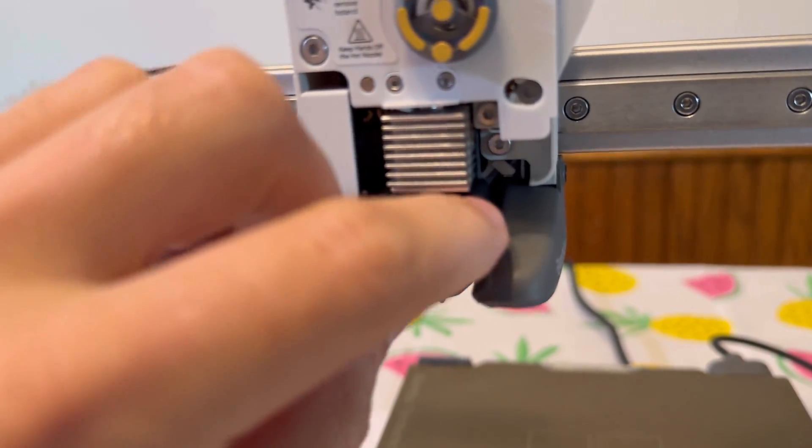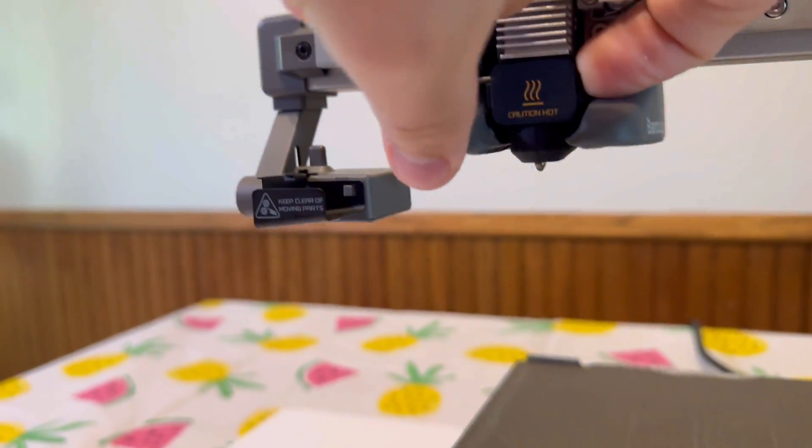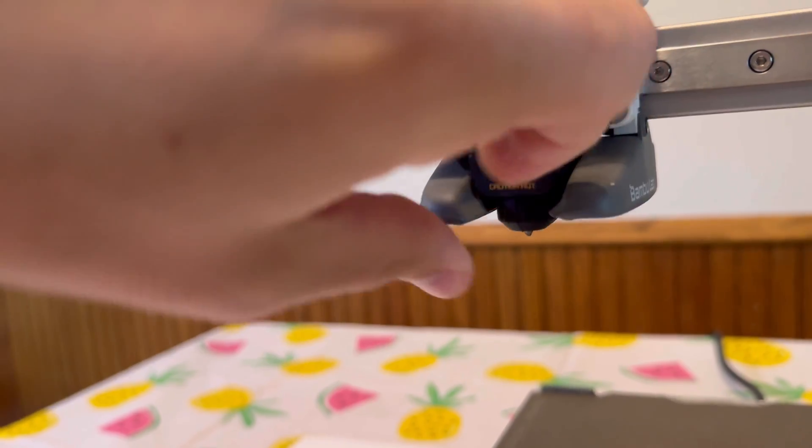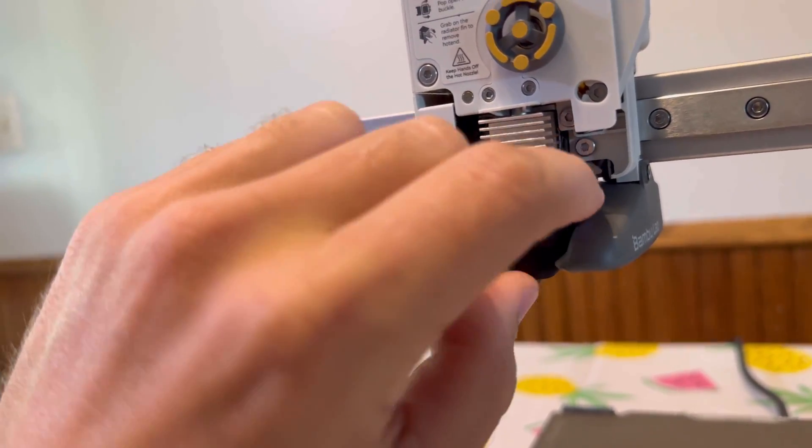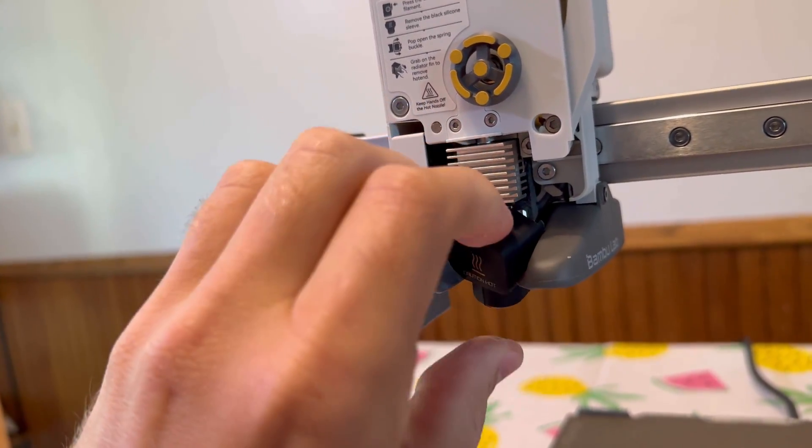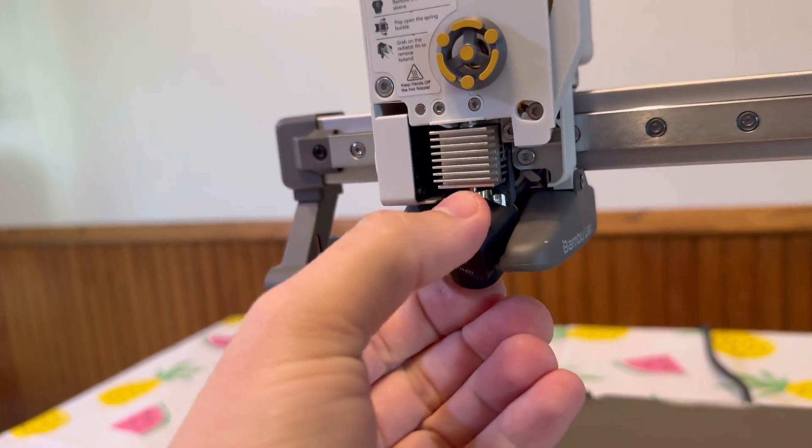Then what we want to do here is pull off this sleeve. There's a little sleeve on this nozzle right here. So pull that off, and I know it's kind of scary taking your printer apart. You're just going to have to trust the process, guys. This is actually pretty simple.